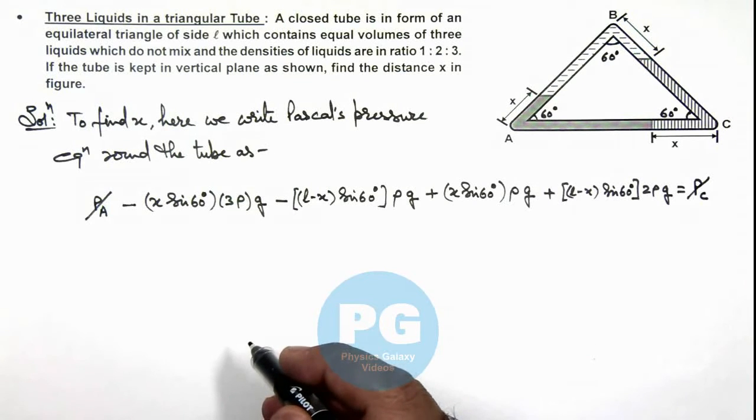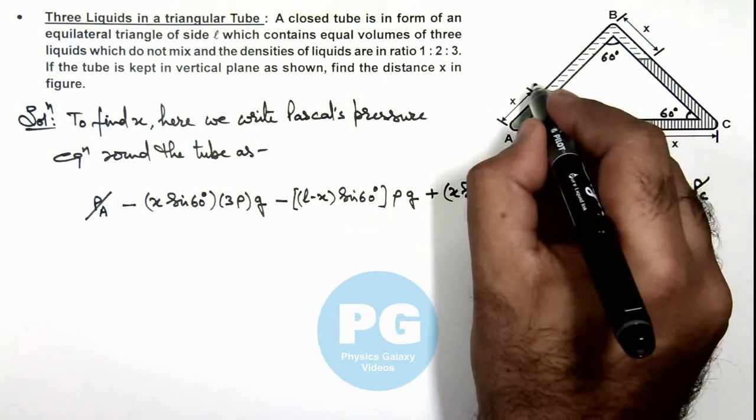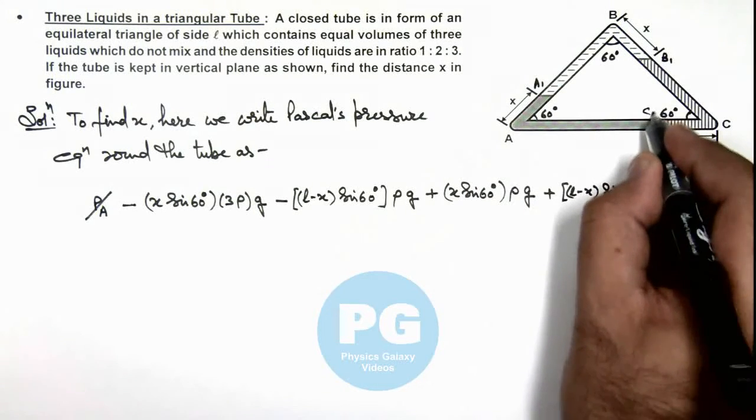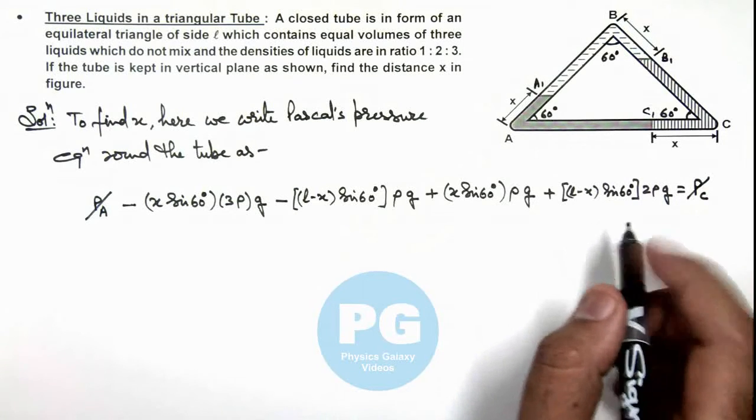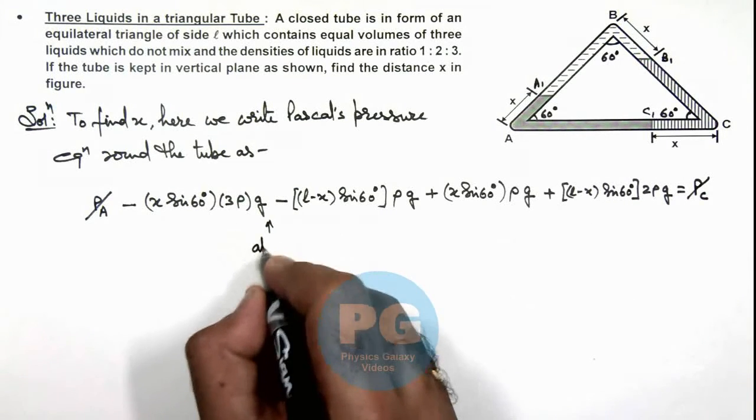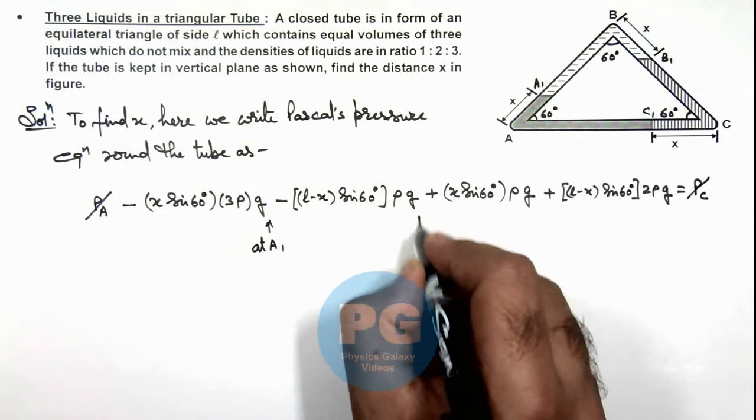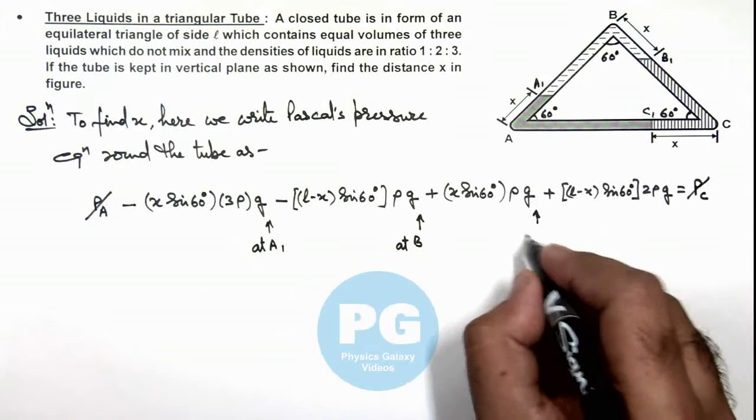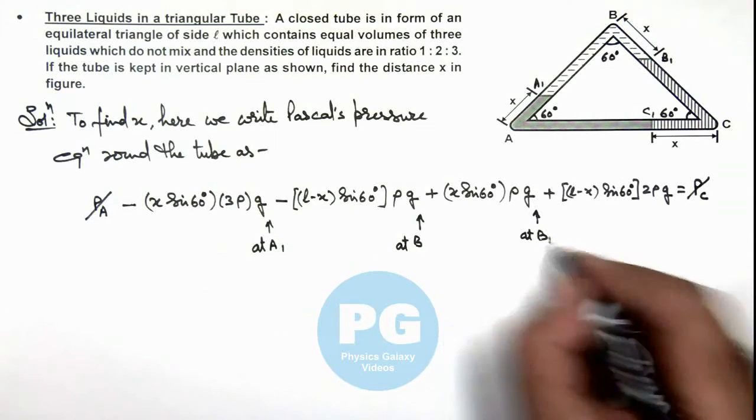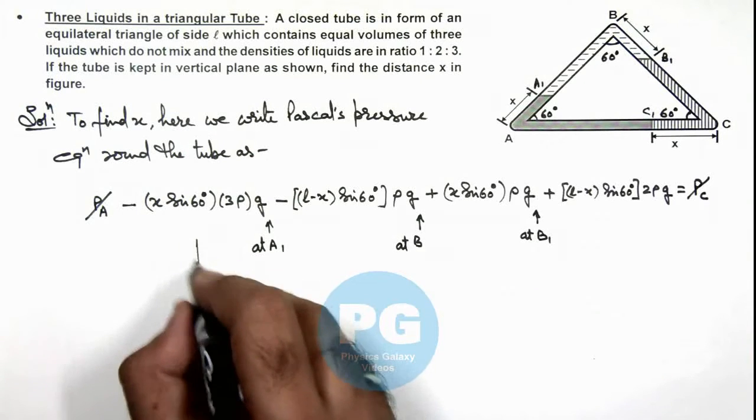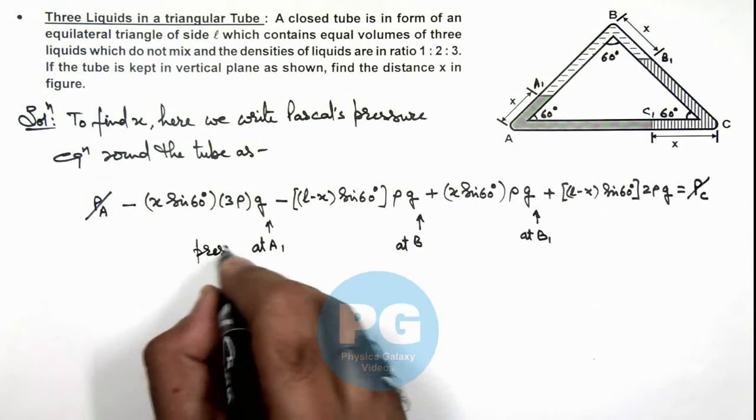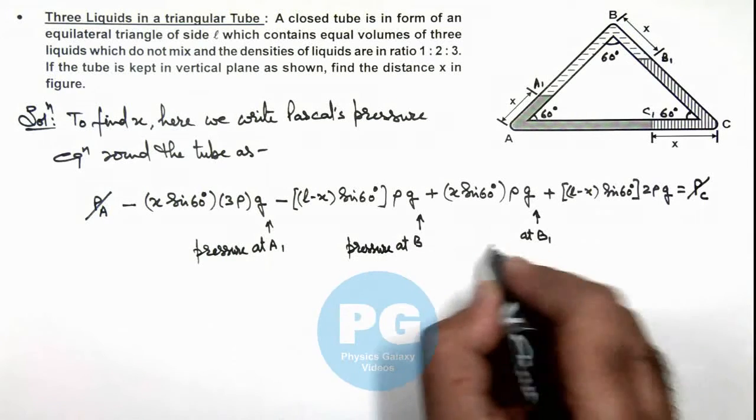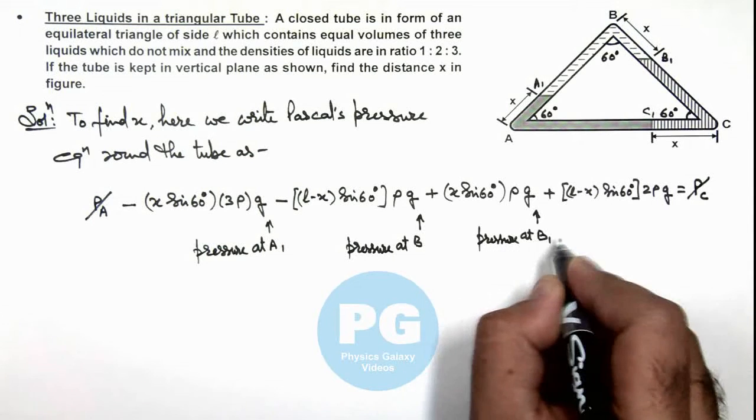We can also mark points as A₁, B₁, and C₁ as the junctions. So we can write: this is the pressure at A₁, this is the pressure at point B, this is the pressure at point B₁, and again we are reaching C. For clarity, this is the pressure at A₁, this is the pressure at B, and this is the pressure at point B₁.